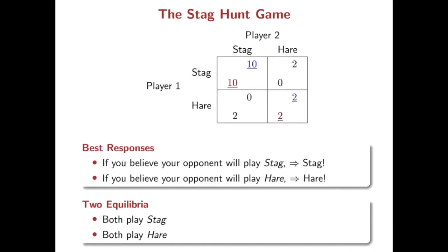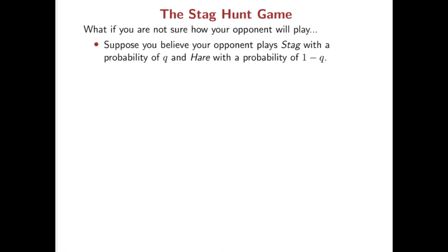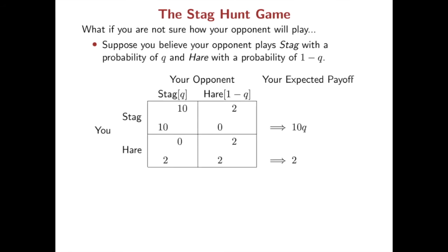Let's go back to the Stag Hunt game in video 2. In this game, there are two equilibria: both play Stag, and both play Hare. These two equilibria perfectly make sense when players have formed some belief about each other. But suppose the two players are total strangers — you have no idea how your opponent will play. Let's say you believe your opponent will play Stag with probability q, and Hare with probability 1-q. If you play Stag, you will expect 10 with probability q and 0 with probability 1-q, so your expected payoff from Stag is 10q.